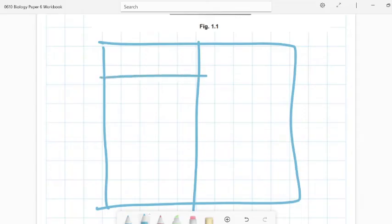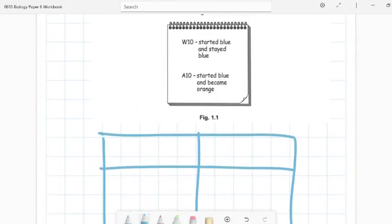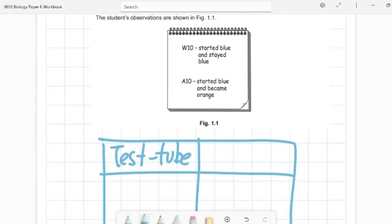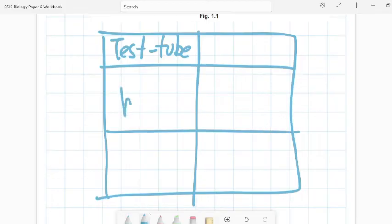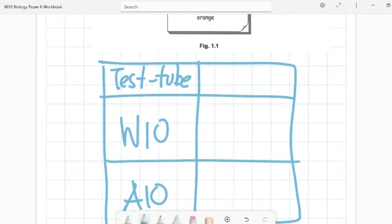So make sure you use a ruler. Don't be like me and draw wiggly lines. So the first one, we're going to say test tube. Test tube does not have any unit. So we're not going to write anything. And our test tube is W10 and A10. So we're going to write them here. W10 and A10.